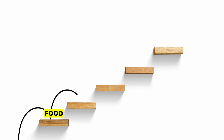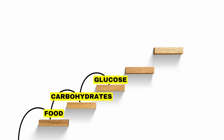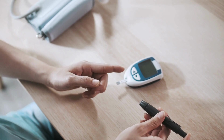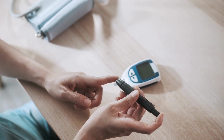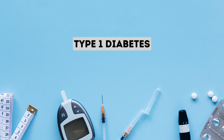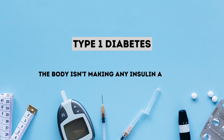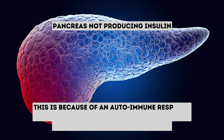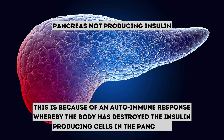For people with diabetes, the process happens the same way, but the issue starts at the insulin production. There are two types of diabetes: Type 1 and Type 2. In Type 1 diabetes, the body isn't making any insulin at all. This is because of an autoimmune response whereby the body has destroyed the insulin-producing cells in the pancreas.